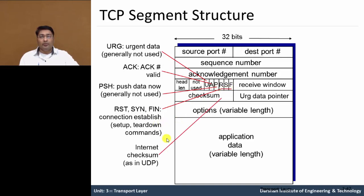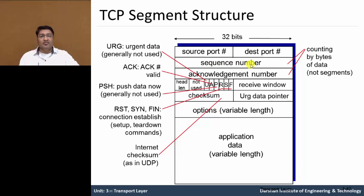The internet checksum field is similar to what we saw in the UDP segment — it is used in the checksum method. The sequence number and acknowledgement number are counted in terms of bytes, not segments.